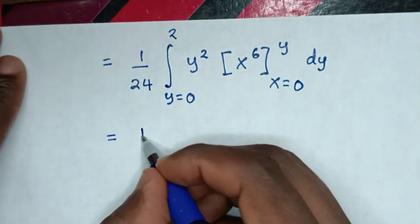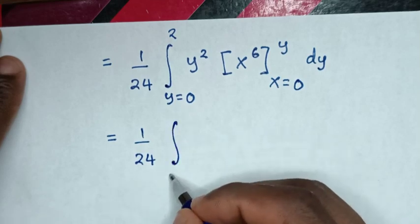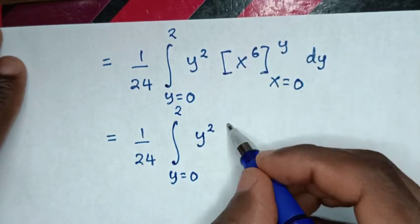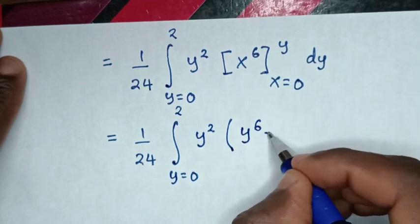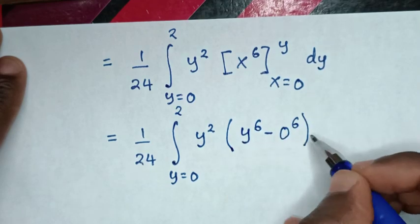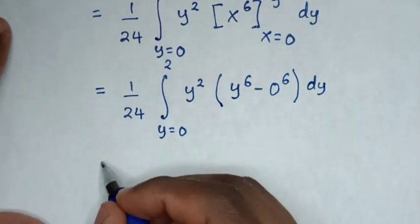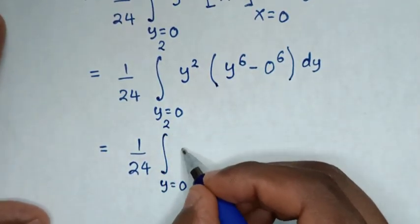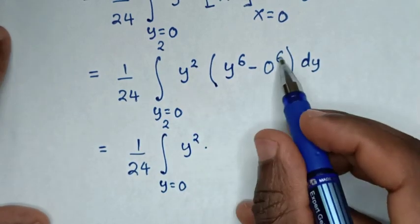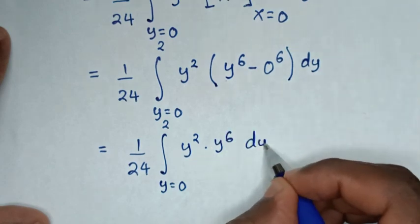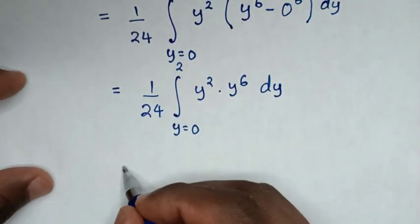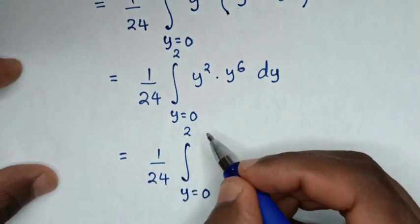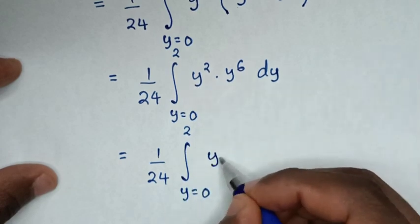Then in the next step: it will be equal to 1/24, then integral from y equals 0 up to 2, y² times, substituting the limits — y⁶ minus 0⁶ — which gives y². Since 0 power of 6 is 0, we have y² times y⁶ = y⁸. Then integral from y equals 0 up to 2 of y⁸ dy.